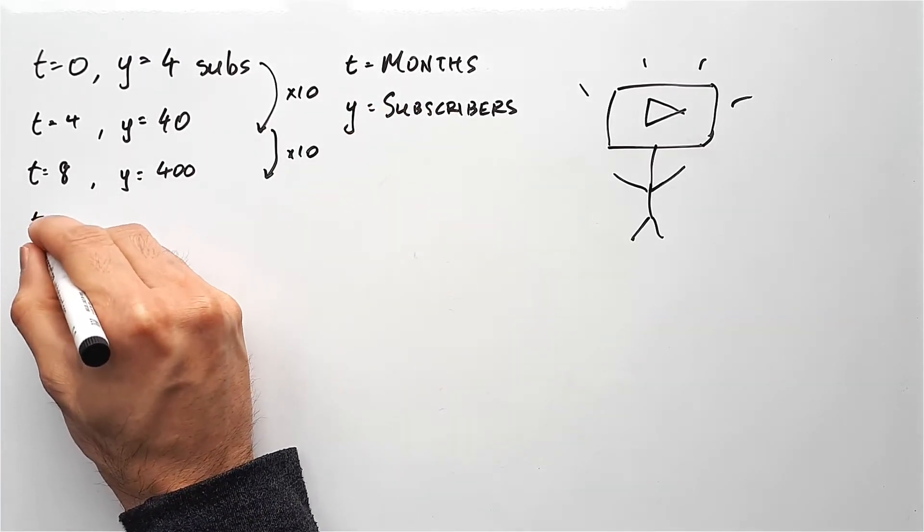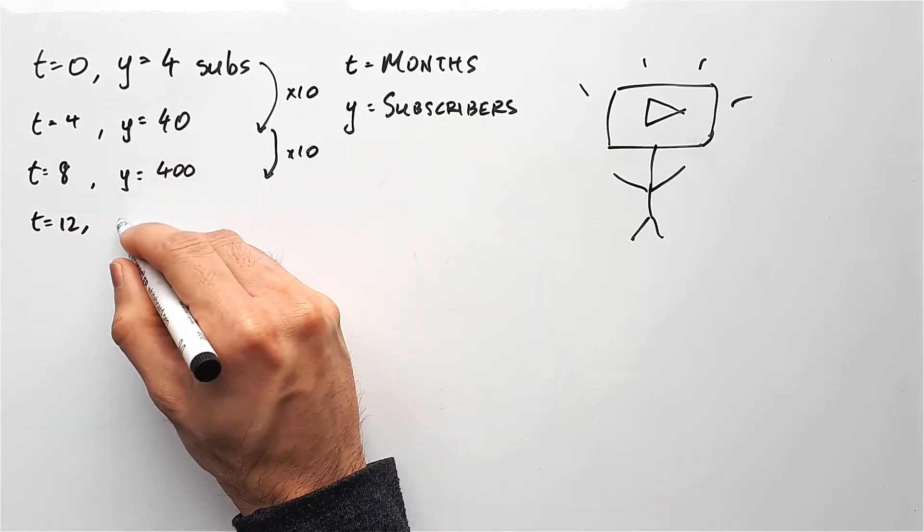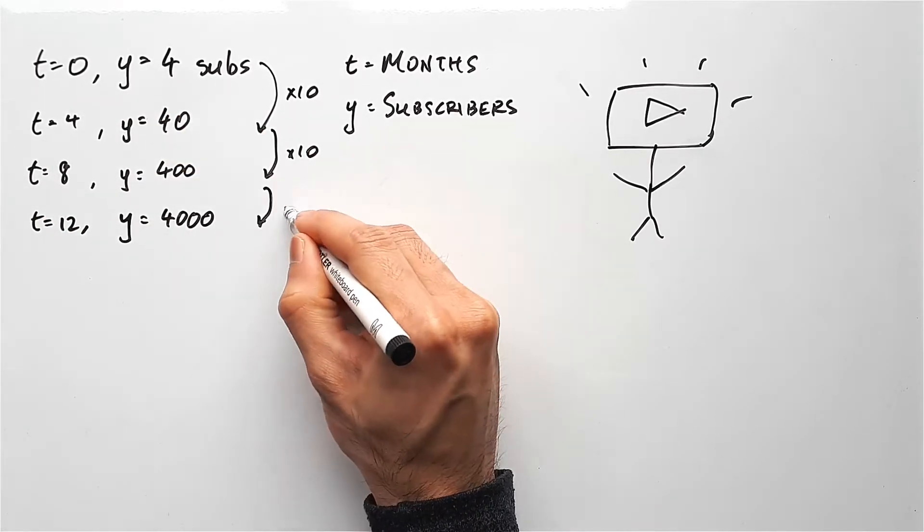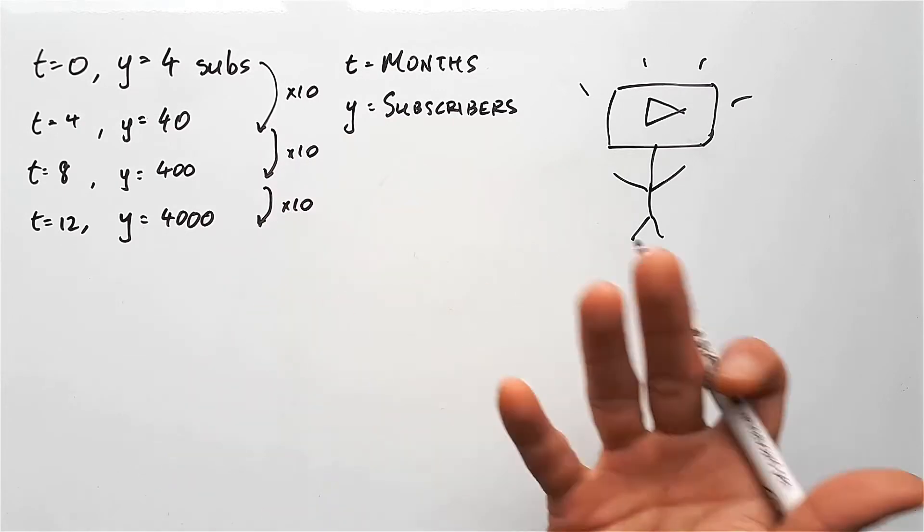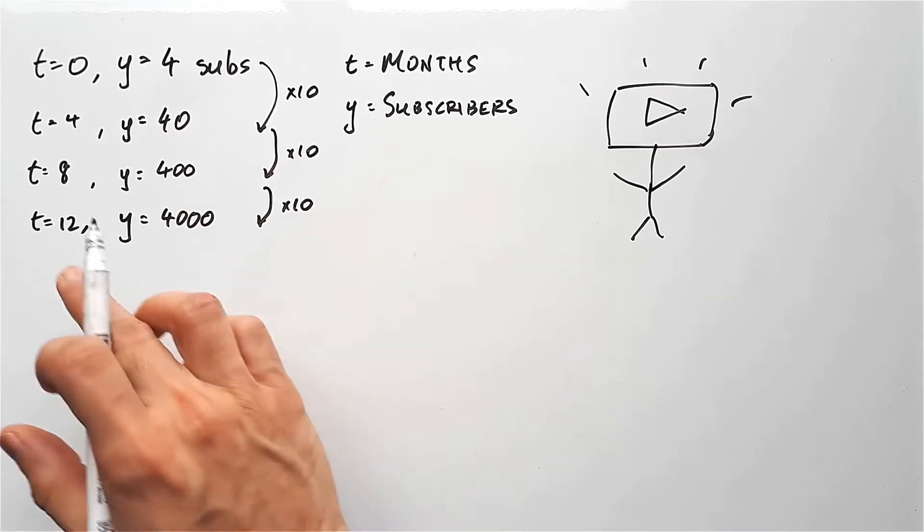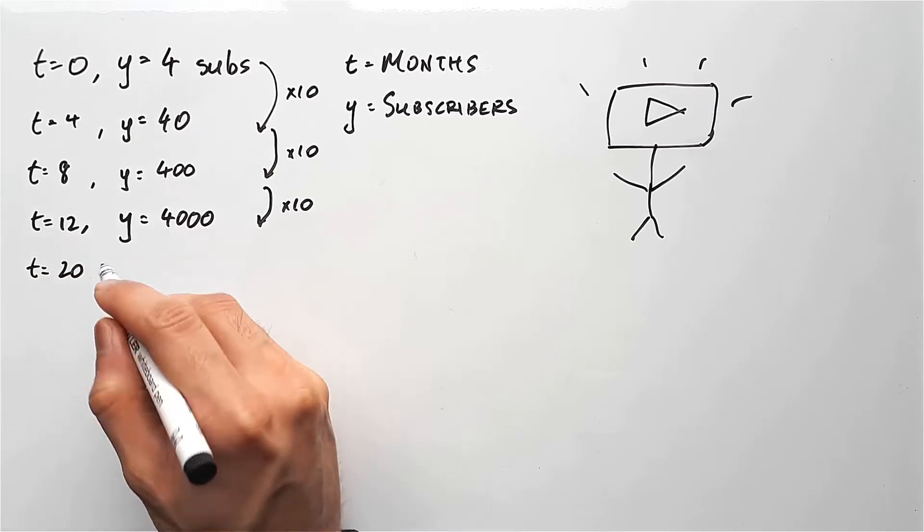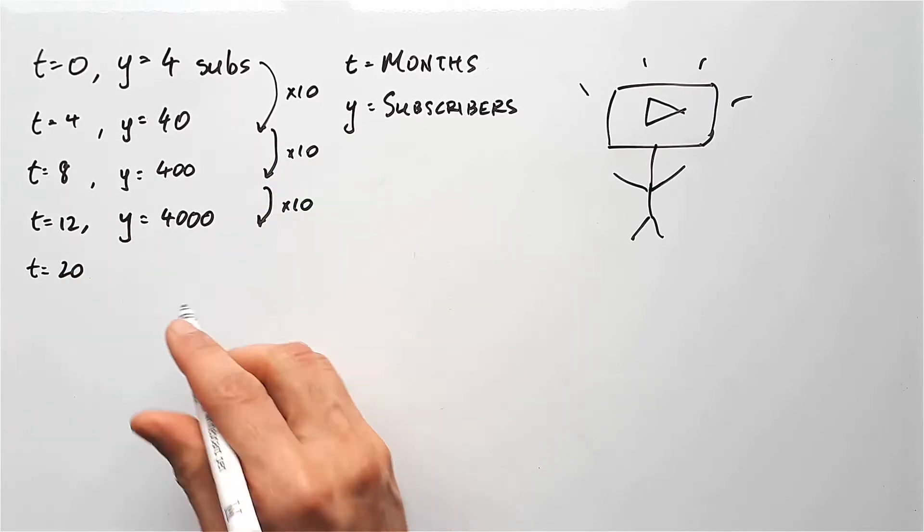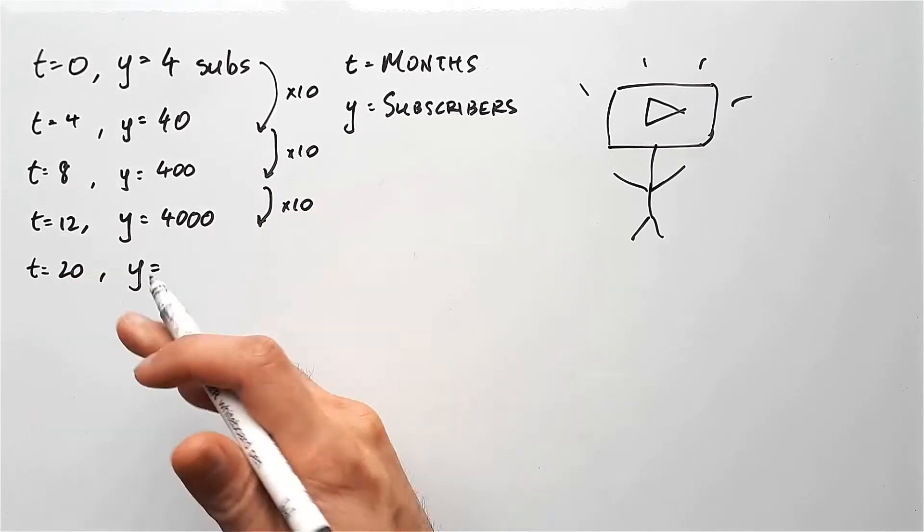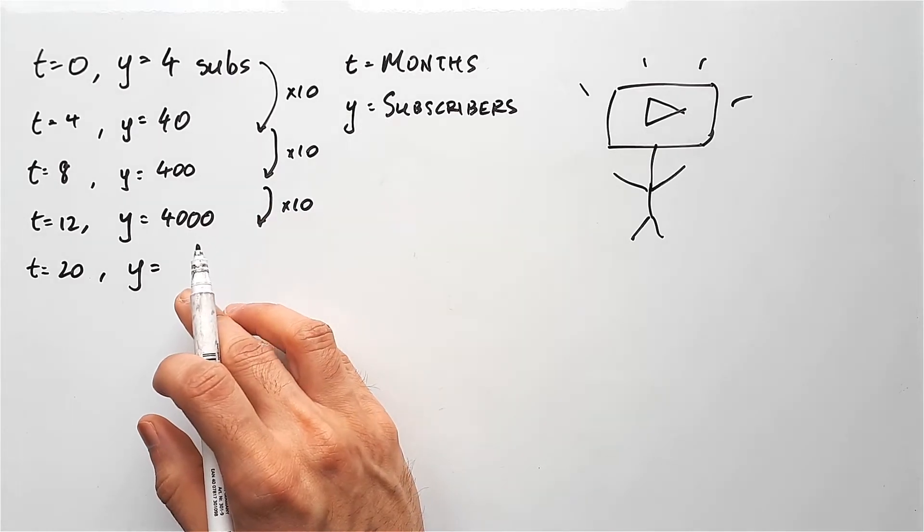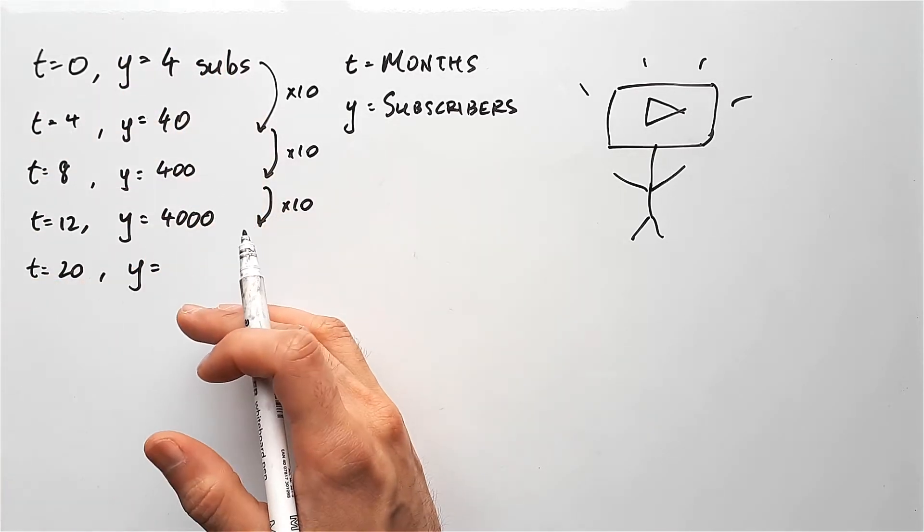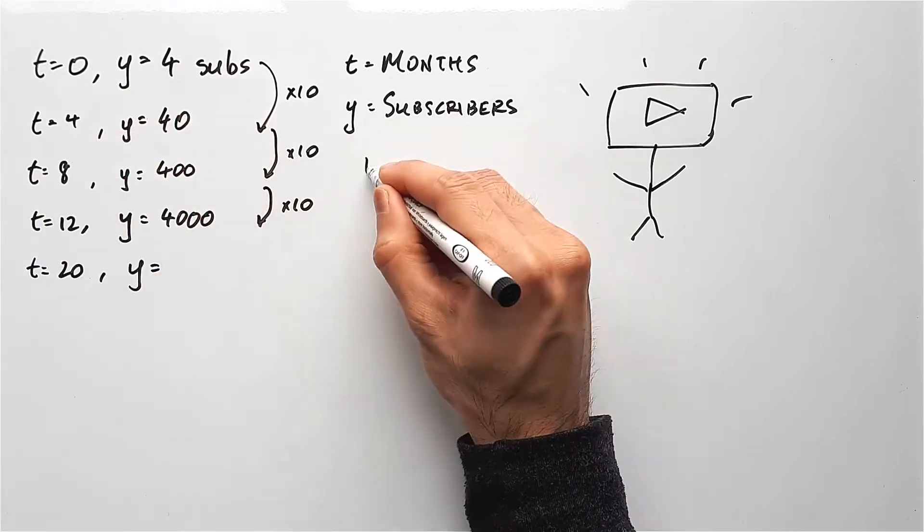Based on this, we could say that after 12 months or a whole year, your total subscriber count should be 4000. Based on this pattern, you could actually count any amount of them if you know how much time has passed. Let's say t is 20. So 20 months have passed in total, then the amount of subscribers could be calculated by working out how many intervals you've gone through, because it seems to increase every four months.